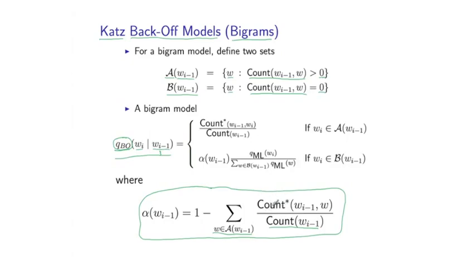Okay, so given these definitions, the back-off estimate takes two forms, depending on whether a word is in the set A or if a word is in the set B. If we have a word in the set A, we simply take the discounted count, so this might, for example, be 0.5 divided by the number of times we've seen wi-1, so this might be 48, for example.